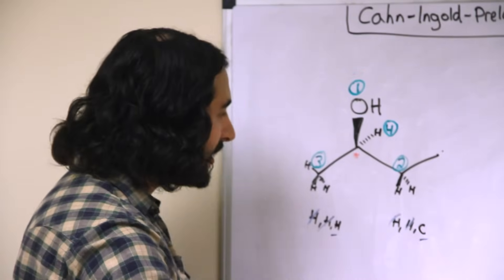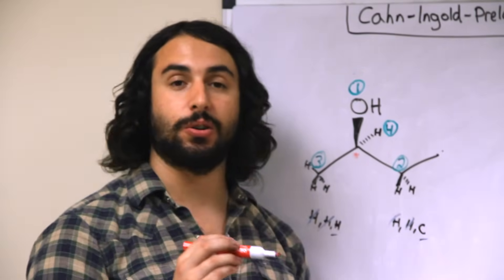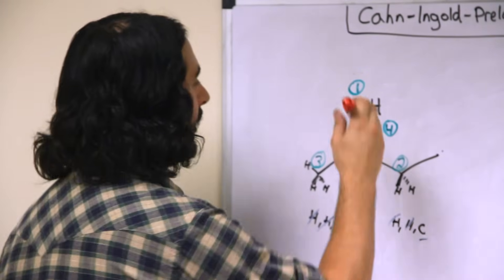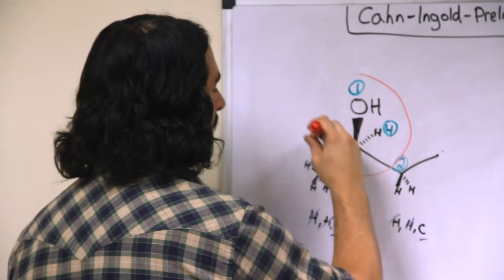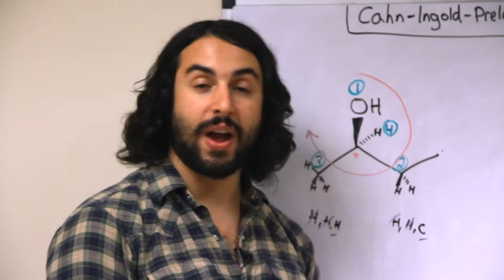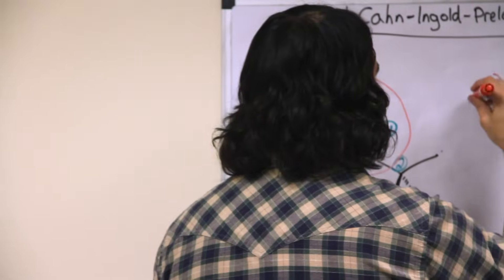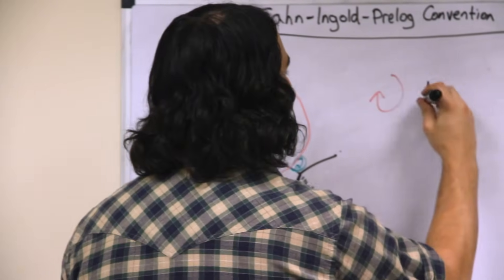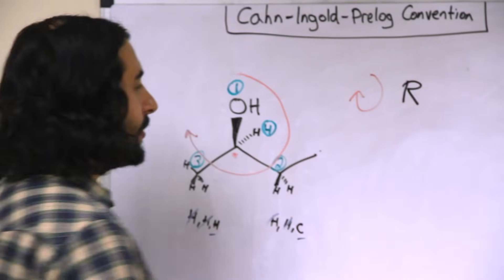For now, the lowest priority group is already away from us, so we're going to make a circle from group one to two to three. Here's one, here's two, here's three. If the circle goes clockwise, that is an R stereocenter.